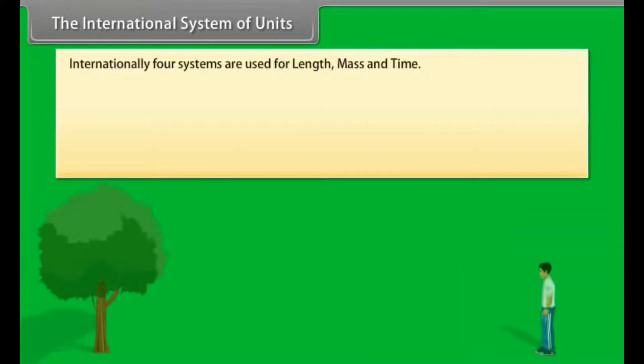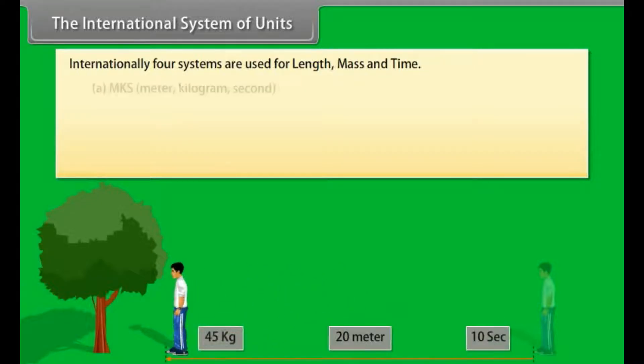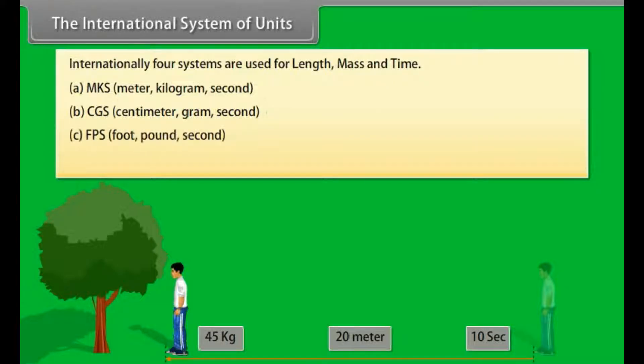The international system of units. Internationally, four systems are used for length, mass and time: A) MKS system, that is meter, kilogram, second system. B) CGS system, that is centimeter, gram and second system. C) FPS system, that is foot, pound, second. D) SI system, that is international system of unit.